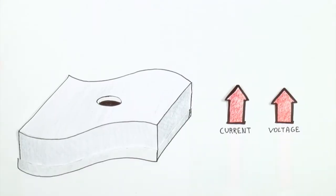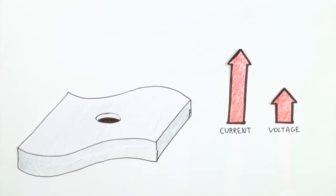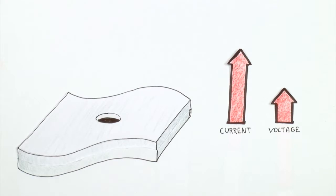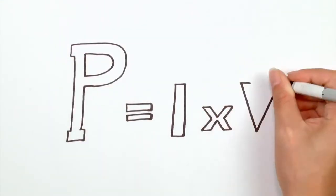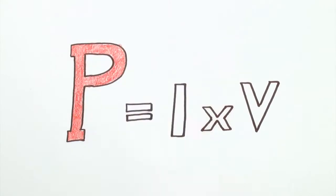So to summarize, the thinner membrane equals more current, and the selective pores equal higher voltage. As we all learned from electricity 101 and quite possibly forgot, power equals current times voltage.